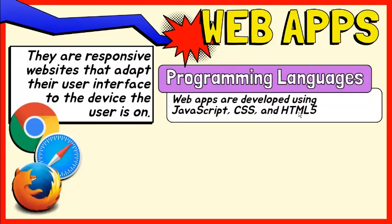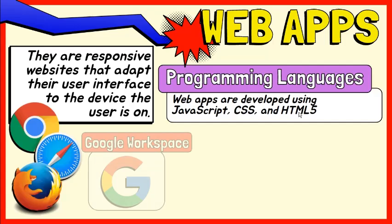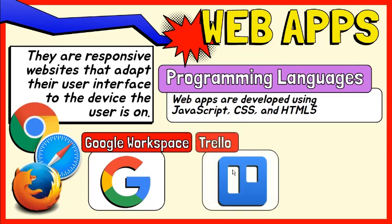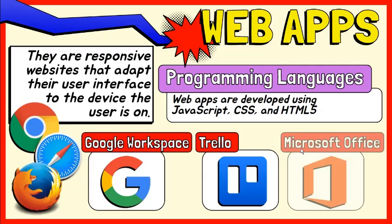Some examples of web apps are the following: Google Workspace, which allows you to collaboratively create and automatically save documents; Trello, which enables team collaboration for more effective project management; and Microsoft Office, which has a popular online suite of products with Word, Excel, and PowerPoint available as web apps.